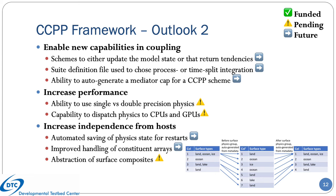To increase performance, we want to create the capability to run physics schemes in either single or double precision and to dispatch the physics to GPUs or CPUs. Finally, we want to increase the CCPP independence from host models by automatically saving the physics state for restart files, improving handling of constituent arrays, and abstracting surface composites — allowing the CCPP framework to handle the multiple surface types that occur inside a grid cell.